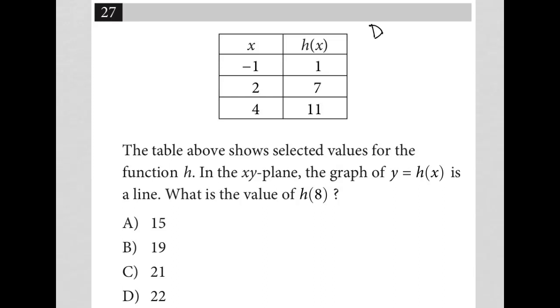This question is a diagram question. We see the table provided here. We have an x column and an h(x) column. So these are basically all ordered pairs: negative 1, 1; 2, 7; 4, 11. The question says the table above shows selected values for the function h. In the xy-plane, the graph of y equals h(x) is a line. What is the value of h(8)?